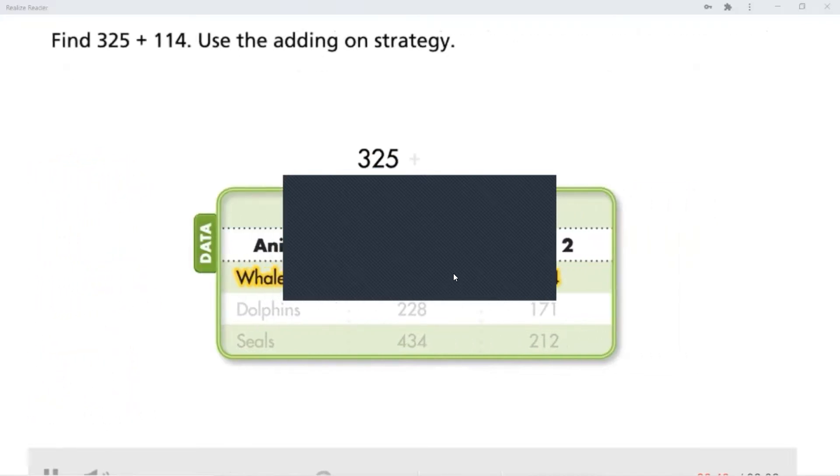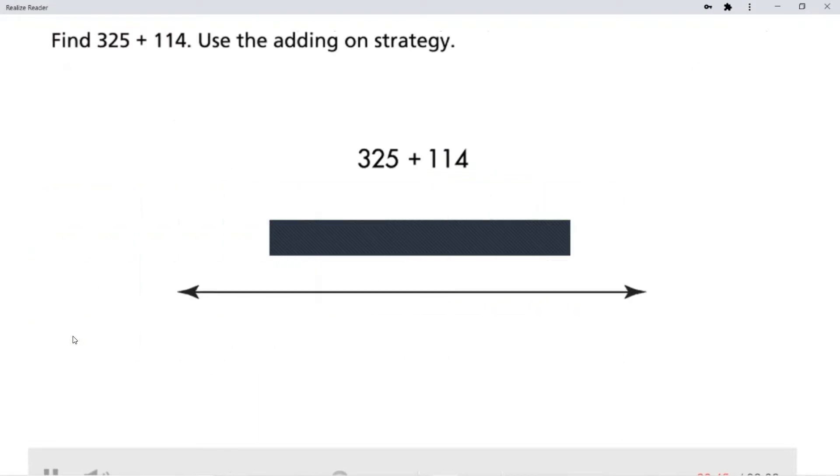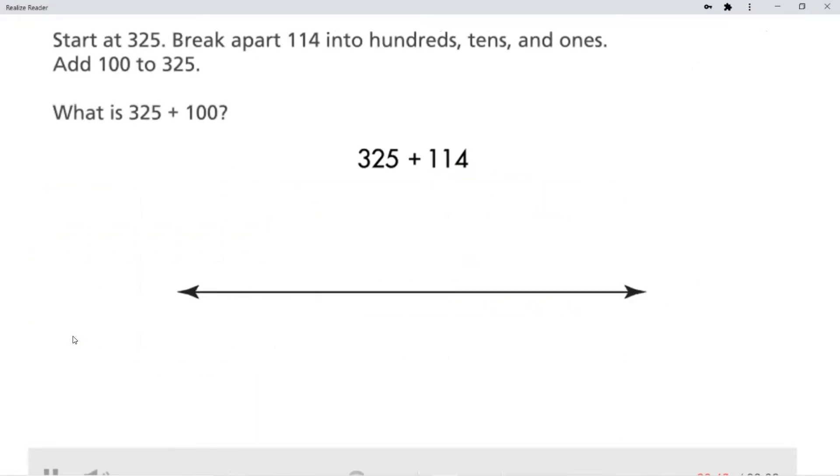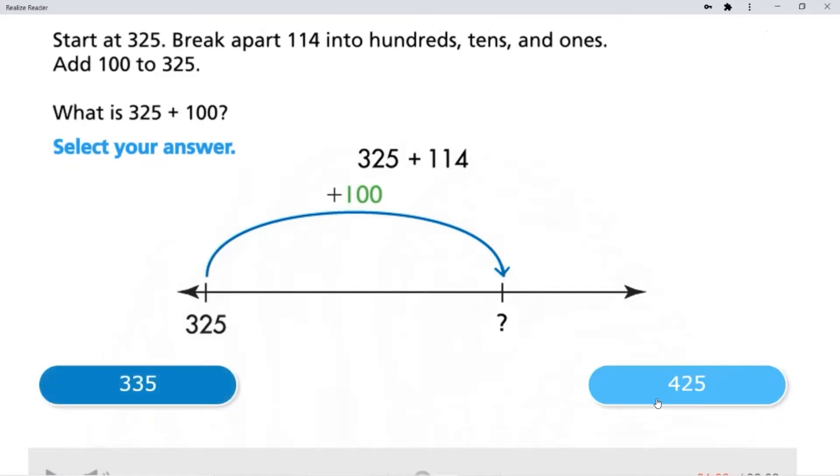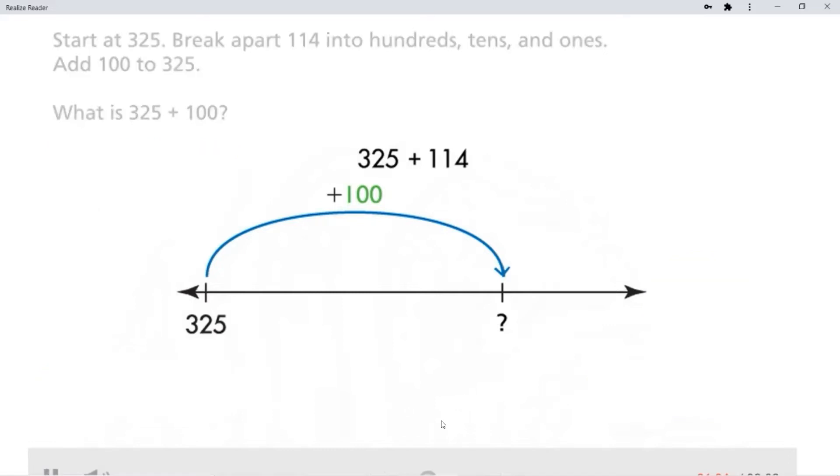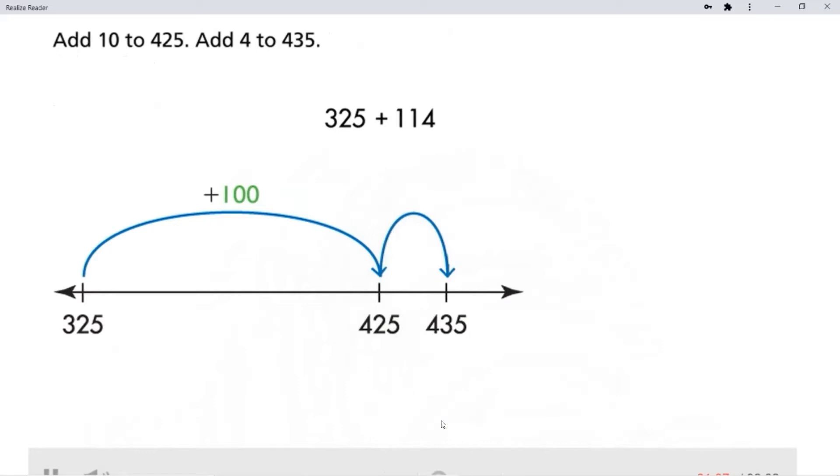Find 325 plus 114. Use the adding on strategy. Start at 325. Break apart 114 into hundreds, tens, and ones. Add 100 to 325. What is 325 plus 100? Select your answer. Add 10 to 425. Add 4 to 435. 325 plus 114 equals 439.